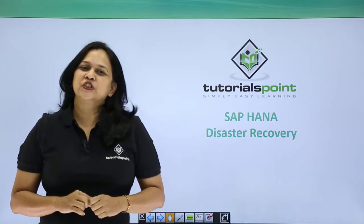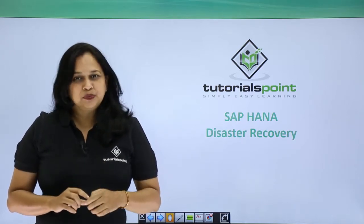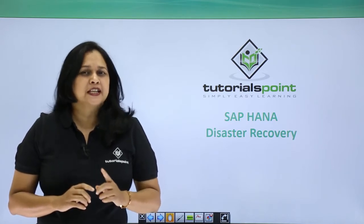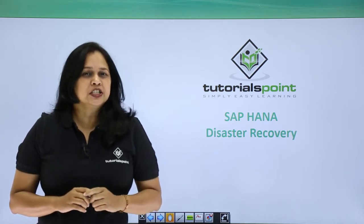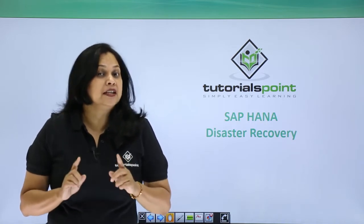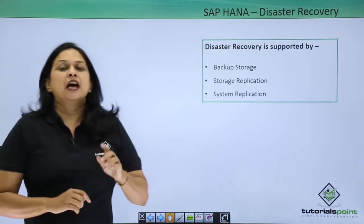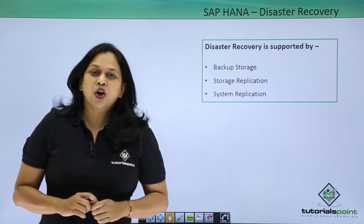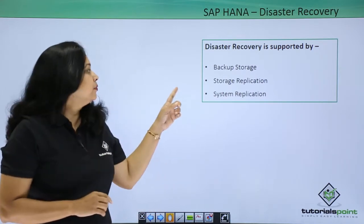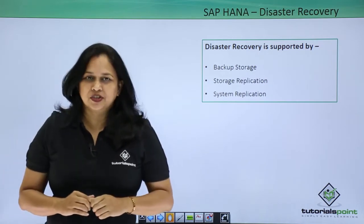SAP HANA is fully designed for high availability. It supports recovery measures ranging from faults and software errors to disasters that decommission an entire data center. SAP HANA offers three levels of disaster recovery support: backup, storage replication, and system replication.